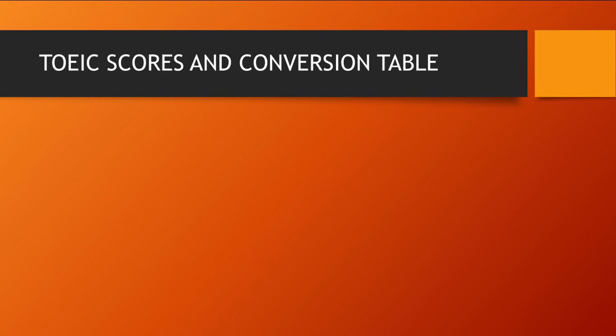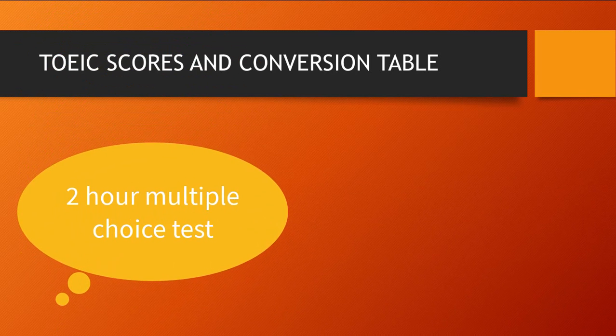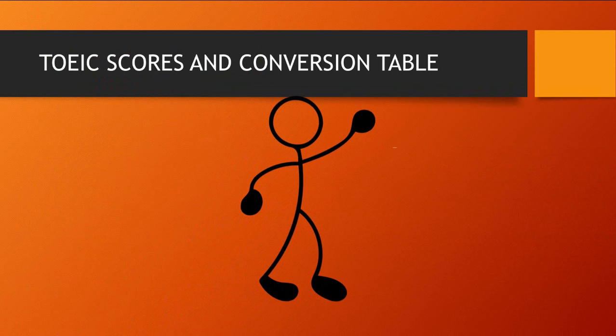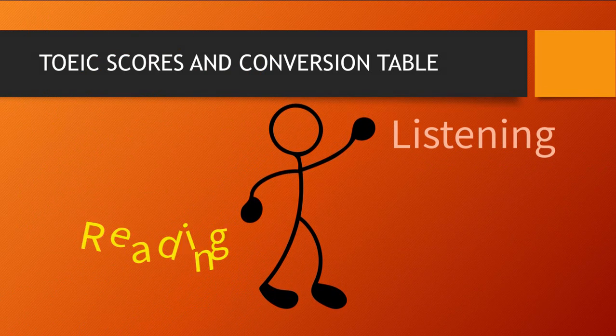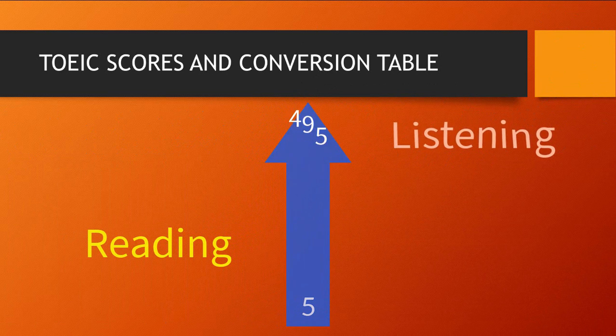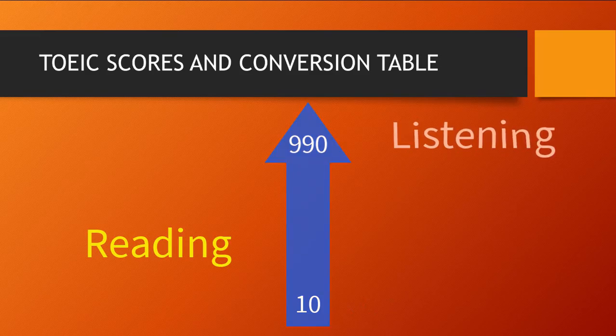TOEIC scores and conversion table. The TOEIC listening and reading test is a two-hour multiple choice test consisting of 200 questions. Each candidate receives independent scores for listening and reading comprehension on a scale from 5 to 495 points. The total score adds up to a scale from 10 to 990 points.